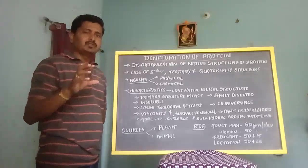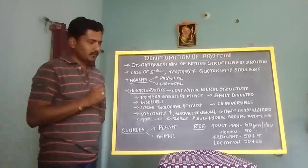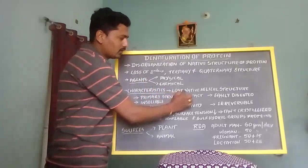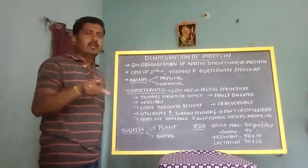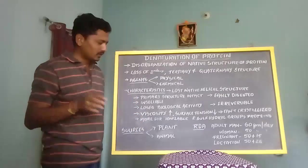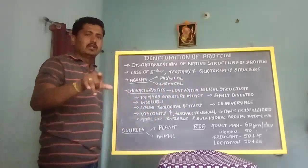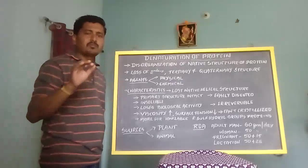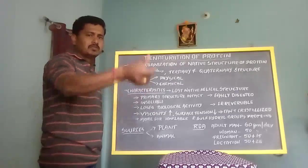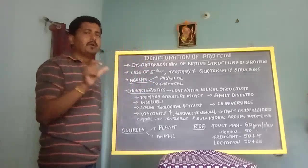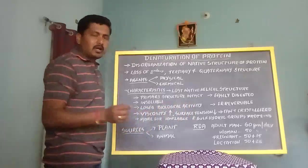After the denaturation process, the protein gets some alterations in its previous characteristics. The first characteristic is the loss of native helical structure — the protein loses its secondary, tertiary, and quaternary helical structure. Only the linear primary structure remains intact. The second point is that the primary structure remains intact; the linear chain with amino acids arranged via peptide bonds is not harmed.